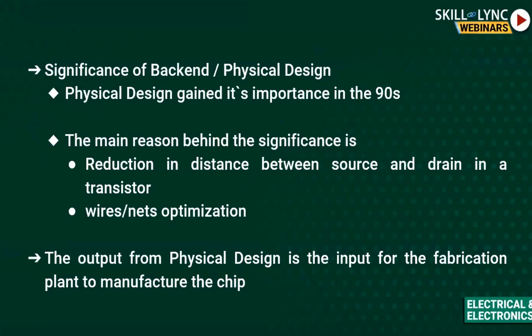As you shrink the design, your wires and nets have to be optimized, and this leads to lots of physical design violations which need to be fixed. Tool companies are now putting more effort to ensure the design is good. The output from the physical design or back-end team is the input for the fabrication plant. The design cycle goes: requirements from the customer → front-end team designs the circuit → output given to the back-end team → physical design output sent to the manufacturing facility → after manufacturing, the chip is tested and all parameters are checked before being delivered to the customer.